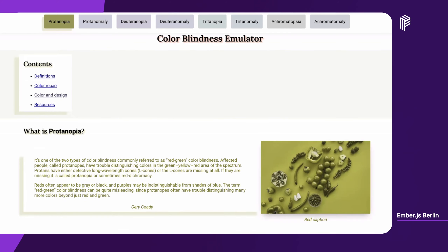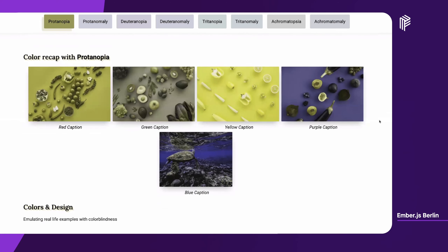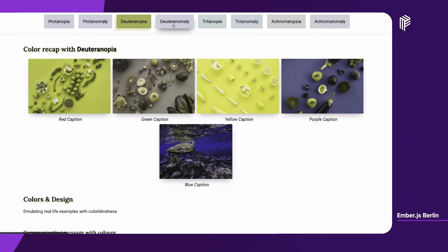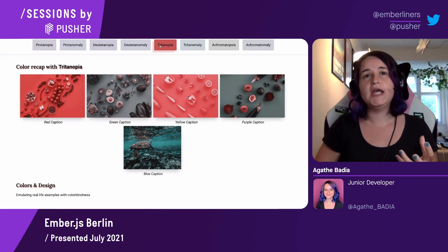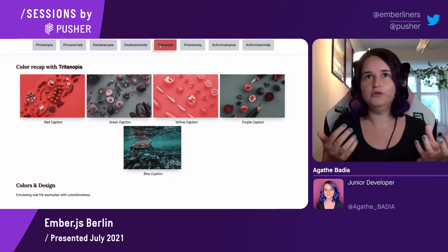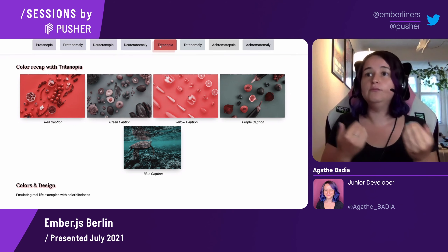We can have a quick look at the definitions in the first part of the app. Protanopia: red-green colorblindness. Protanomaly: a milder version. Deuteranopia also has red-green colorblindness but also affects yellow, purple, and gray — the green caption actually looks quite gray with this emulator on. Deuteranomaly is the milder version, where colors like green and red appear more faded. Tritanopia is quite different, with a colorblindness around red and yellow where yellow looks literally like pink, and also affecting green, blue, and purple.